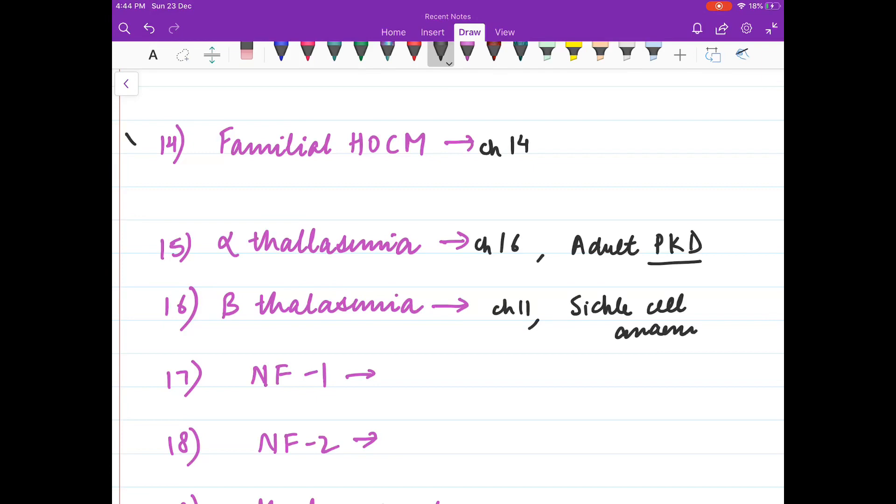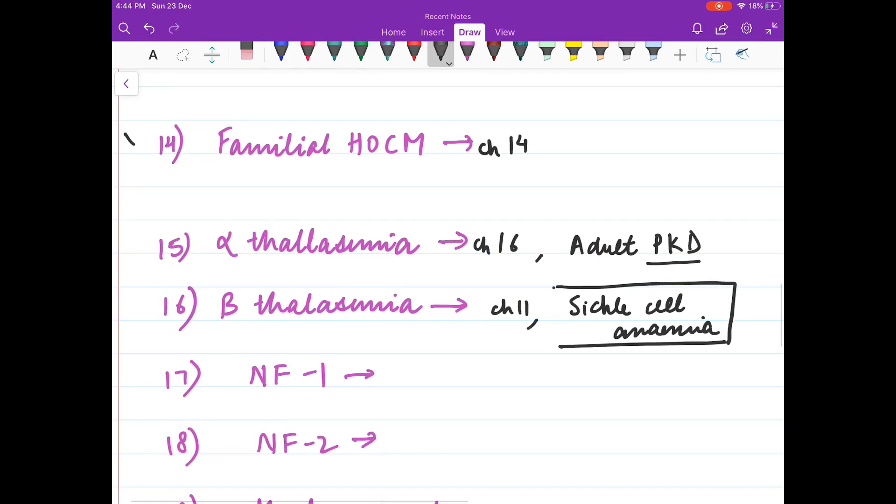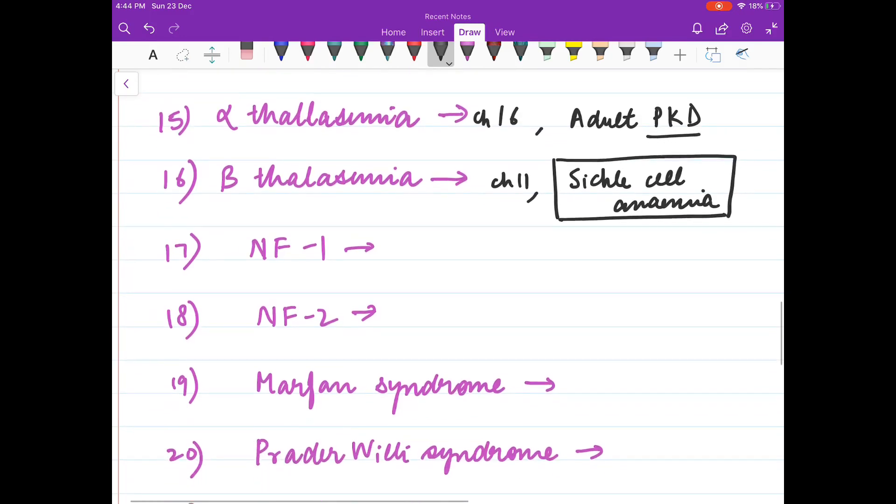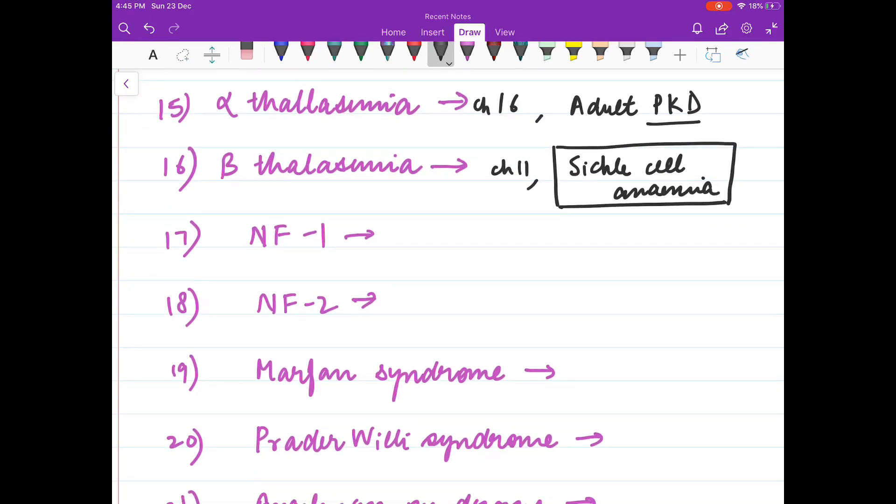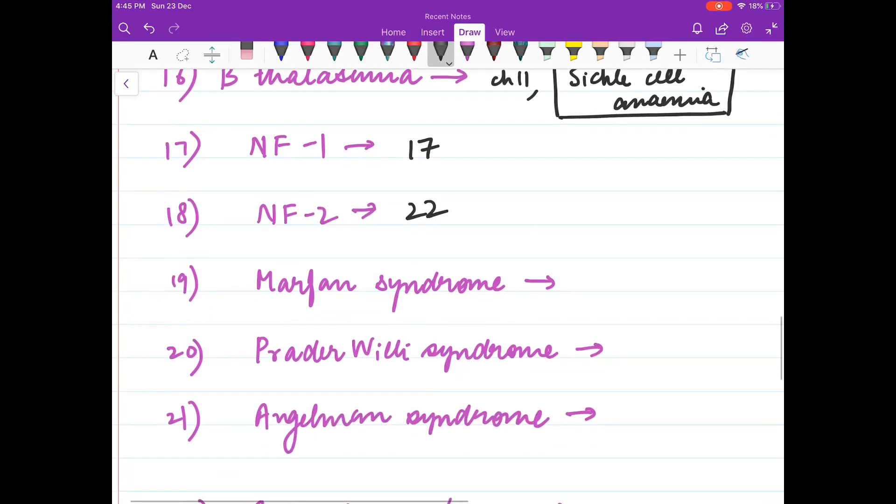Another is sickle cell anemia. Sickle cell anemia is due to replacement of glutamic acid by valine on sixth position of beta chain. NF1 is chromosome 17. NF2, chromosome 22.